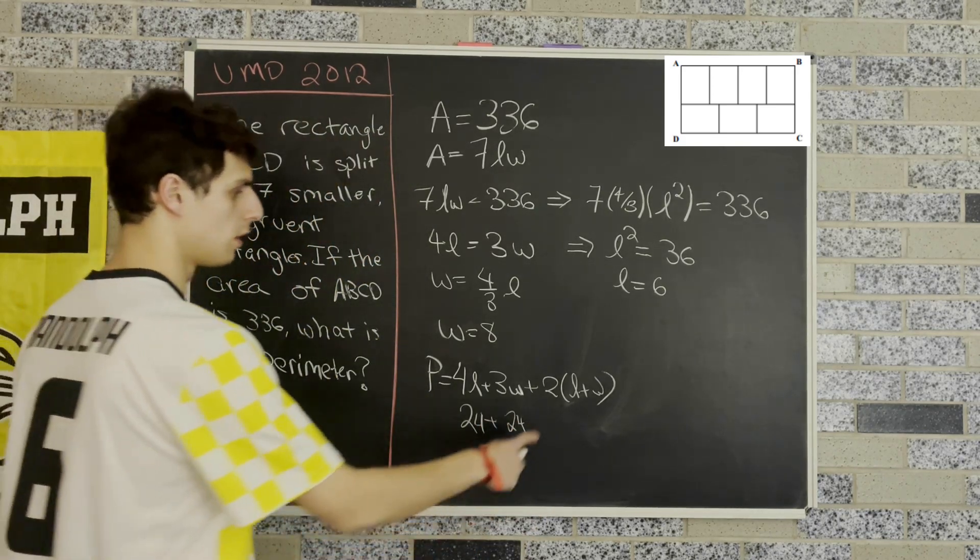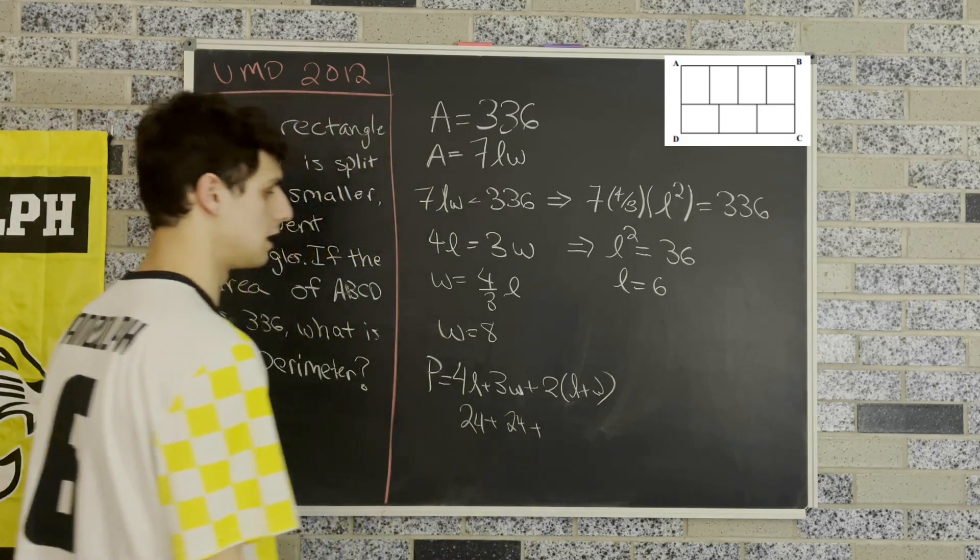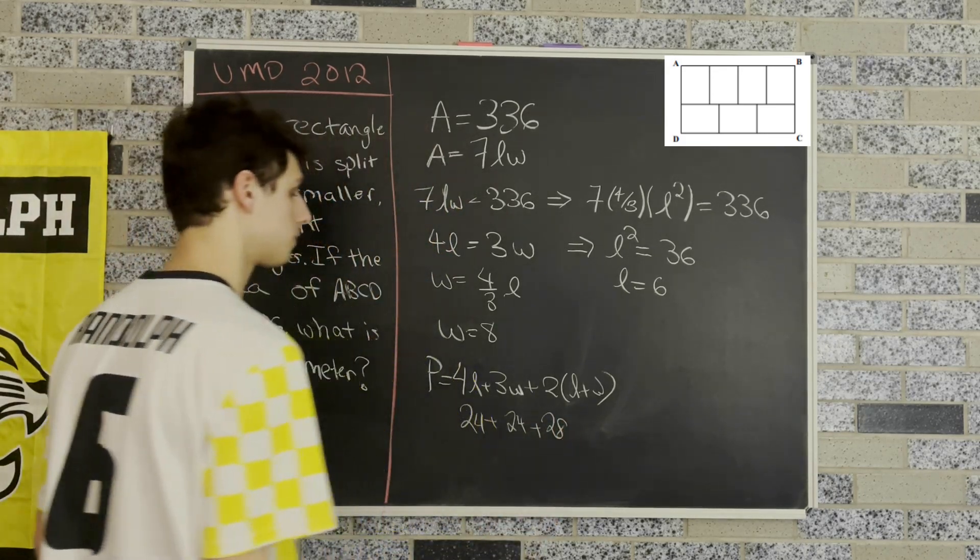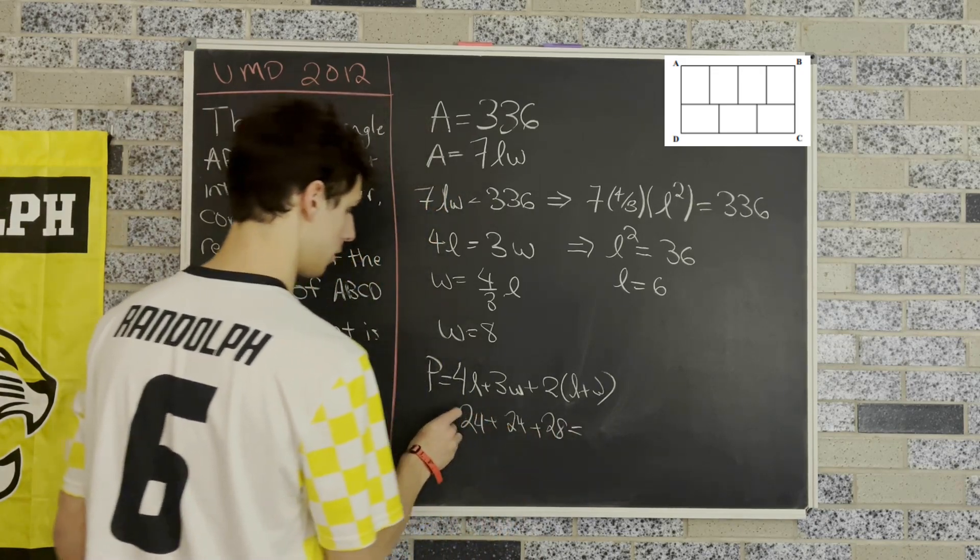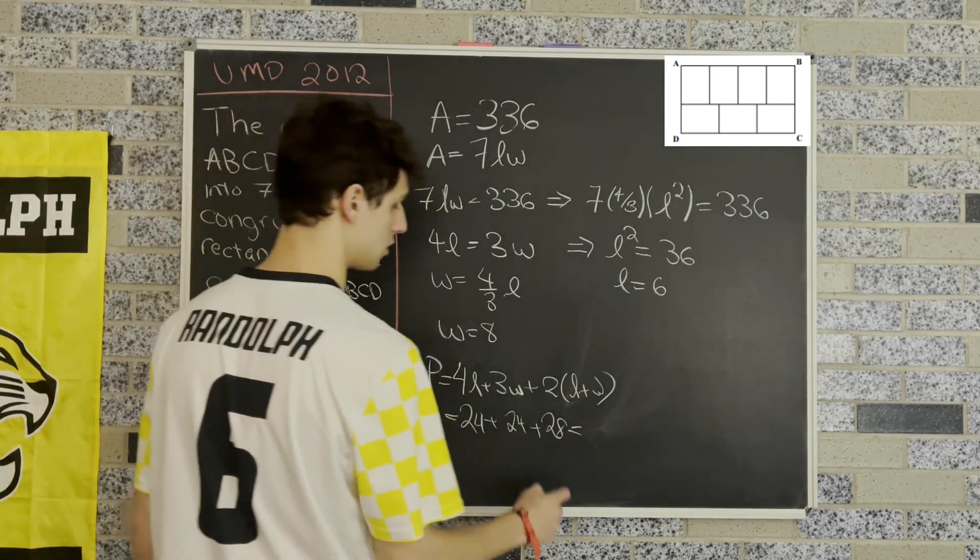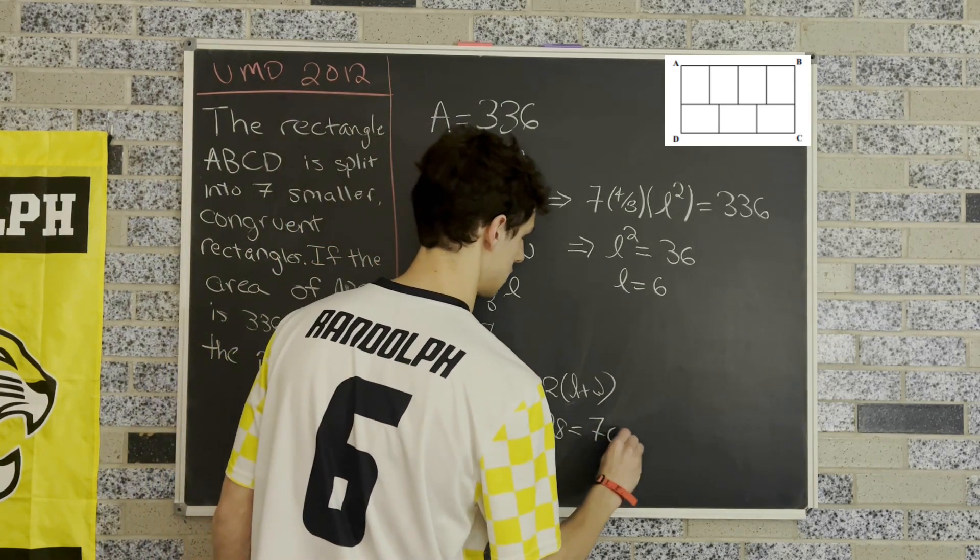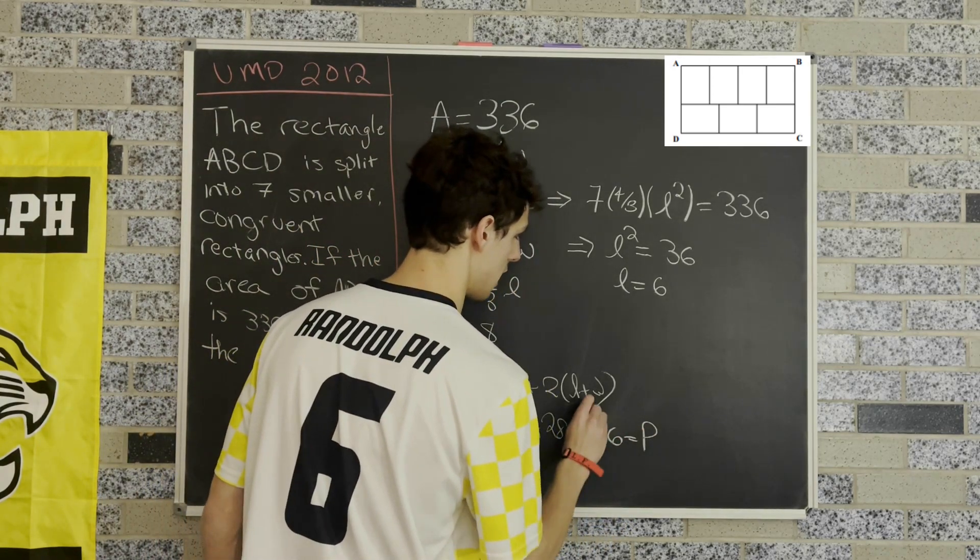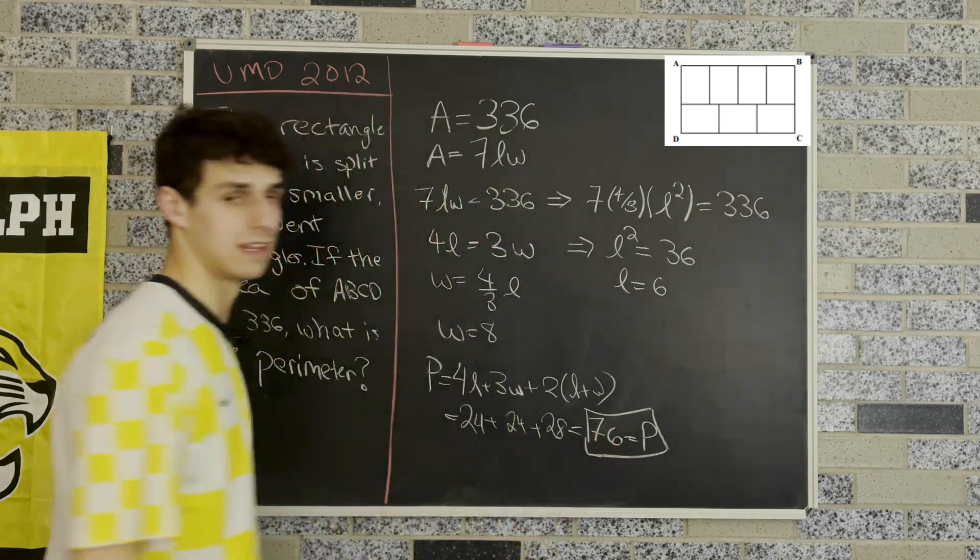And then plus two times the combination, so that's plus 28. Our perimeter is 24 plus 24, which is 48, plus 28 is 76. And that is our final answer.